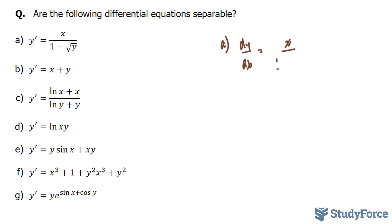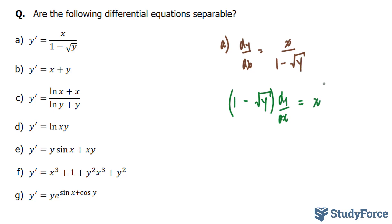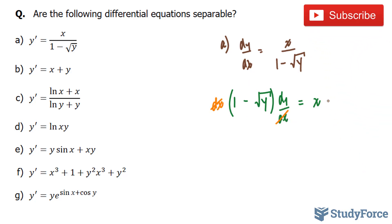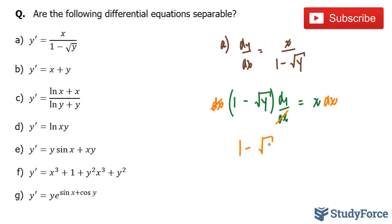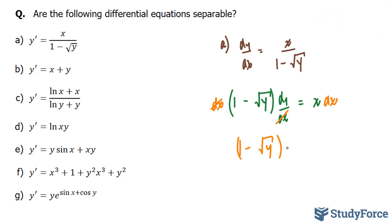For x over 1 minus the square root of y, I'll multiply both sides by what's in the denominator. I end up with 1 minus the square root of y times dy over dx is equal to x on the right side. Multiplying both sides by dx, I'll end up with 1 minus the square root of y times dy is equal to x dx. Notice that we have separated the y terms from the x terms. Therefore, this is separable.